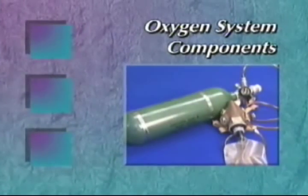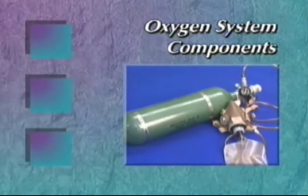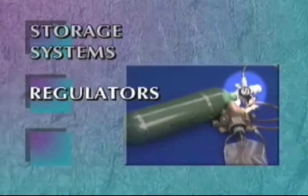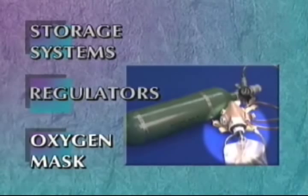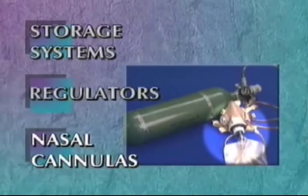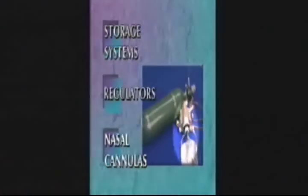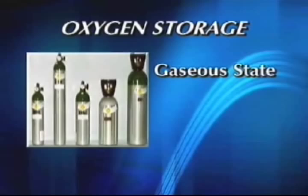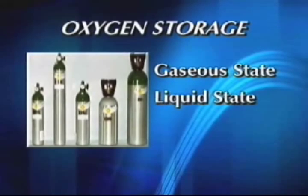There are three components on most oxygen systems, whether portable or fixed: storage systems, regulators, and oxygen mask or nasal cannula. There are also three ways to store oxygen: gaseous state, liquid state, and solid state.